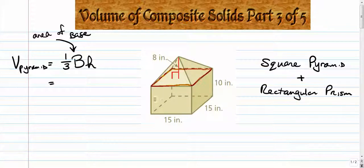Alright, that down there is a square. Alright, so here's what we want to do. We want to say one-third times the area of a square times the height of the pyramid. One-third times fifteen squared times eight.